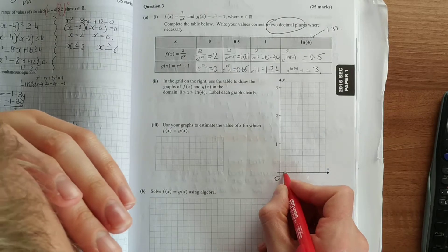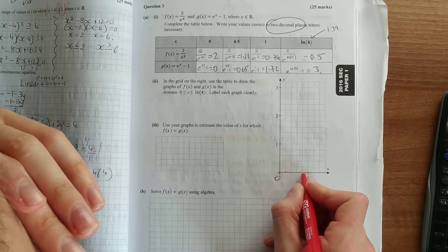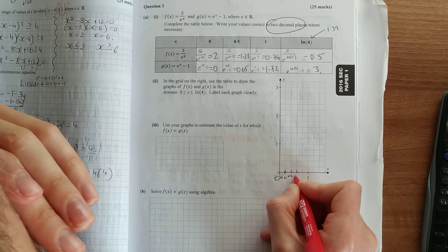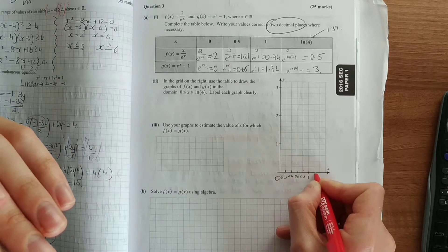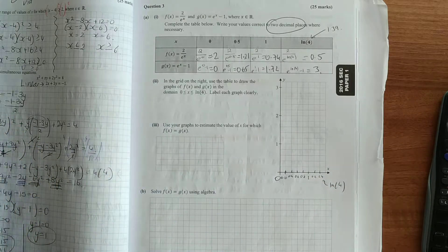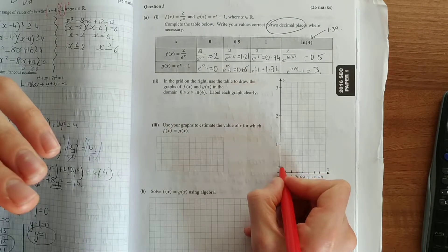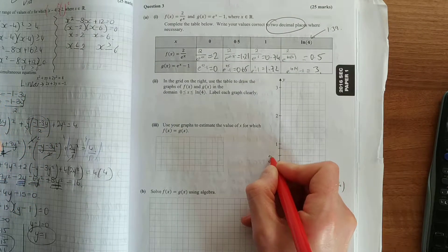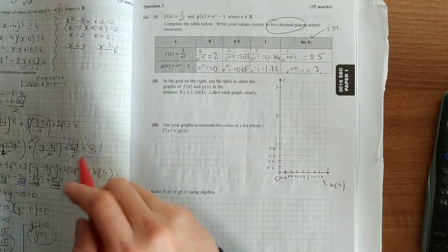So here it goes between 0 and 1. Now how many boxes are there? 1, 2, 3, 4, 5. So each of those is like 0.2, 0.4, 0.6, 0.8, 1.2, 1.4, which is basically your ln of 4. And up here it's 2, 4, 6, 8, 10. It's the same thing, 0.2, 0.4, 0.6, 0.8, and so on.